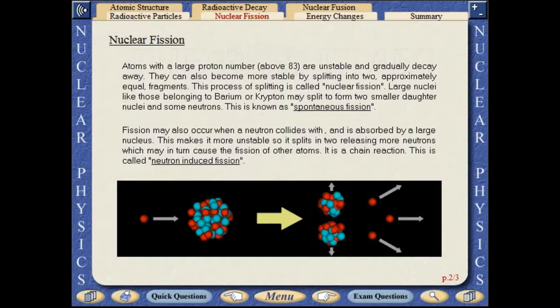Fission may also occur when a neutron collides with and is absorbed by a large nucleus. This makes it more unstable, so it splits in two, releasing more neutrons, which may in turn cause the fission of other atoms. It is a chain reaction. This is called neutron-induced fission.